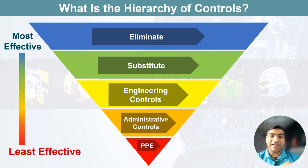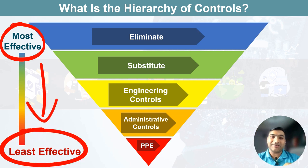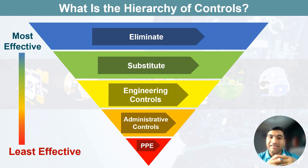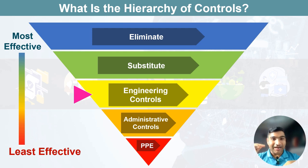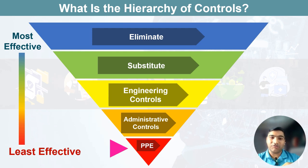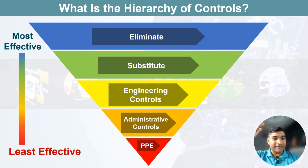Here you see the diagram of Hierarchy of Controls. They are arranged from the most to least effective and include elimination, substitution, engineering controls, administrative controls and personal protective equipment. The top one is most effective and the bottom one is least effective.